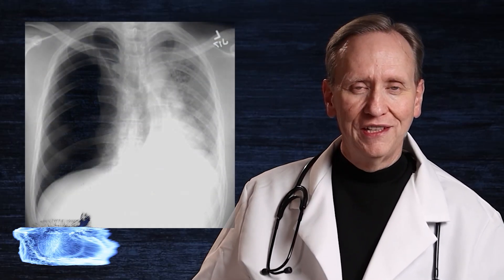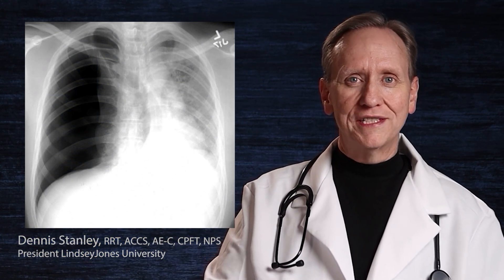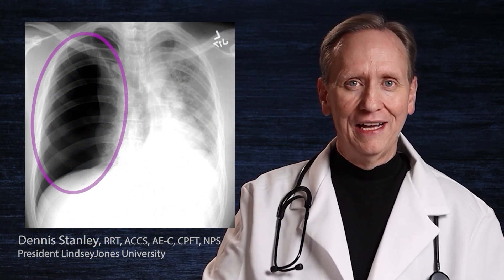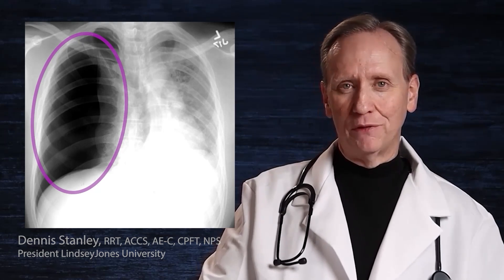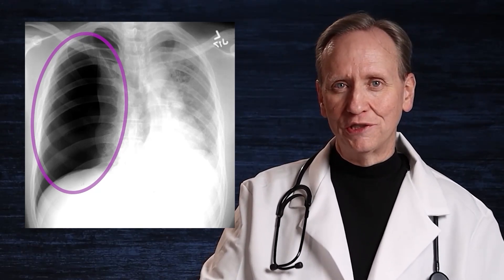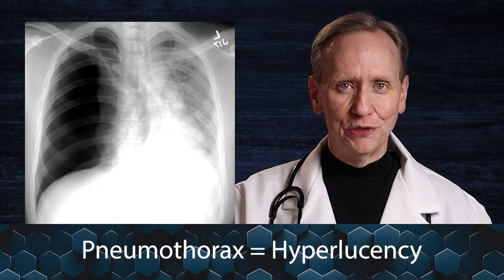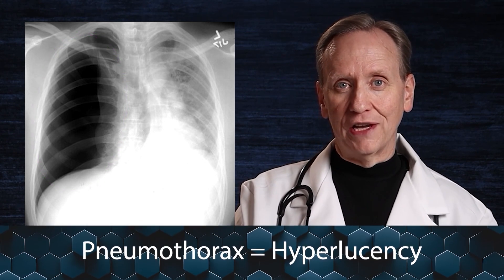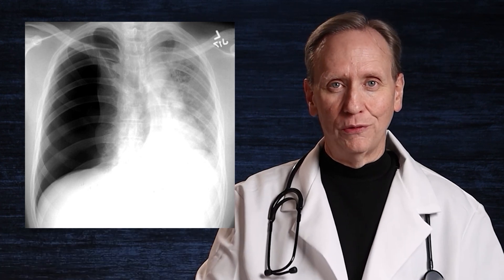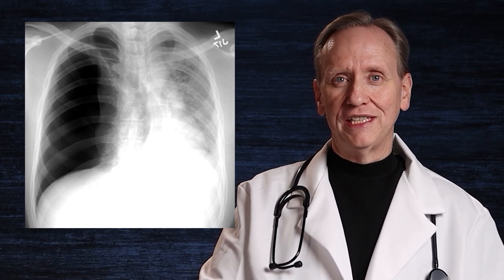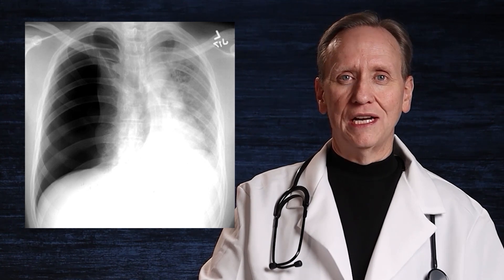Now let's take a look at certain pathologies and what their chest x-ray may look like. First, after talking about a normal lung, let's look at a pneumothorax. As you look at this closely, one side is a little bit more black. That black is described as hyperlucency — the x-ray is able to get through too much — compared to the normal side, which would be described as radiolucent.